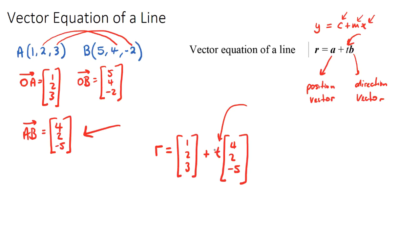If T was, for example, 2, 1 plus 2 times 4, 2 plus 2 times 2, 3 plus 2 times negative 5, and that answer is where we will be on the line when T equals 2.